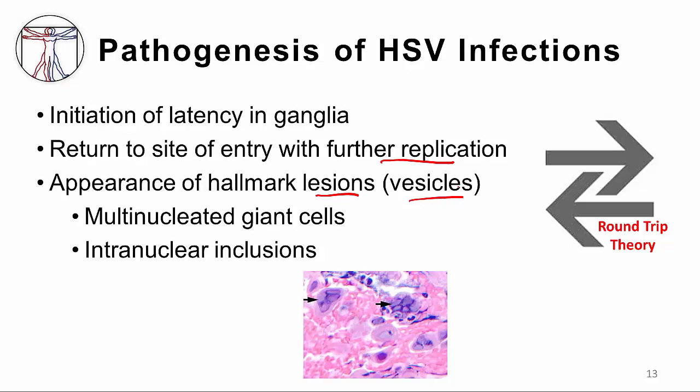If one were to biopsy these vesicles, one would see evidence of multinucleated giant cells and intranuclear inclusions, as shown on this schematic, consistent with an HSV infection. Going from the skin to the ganglia and the ganglia back to the skin with the eruption of the lesions is referred to as the round-trip theory of herpes pathogenesis.